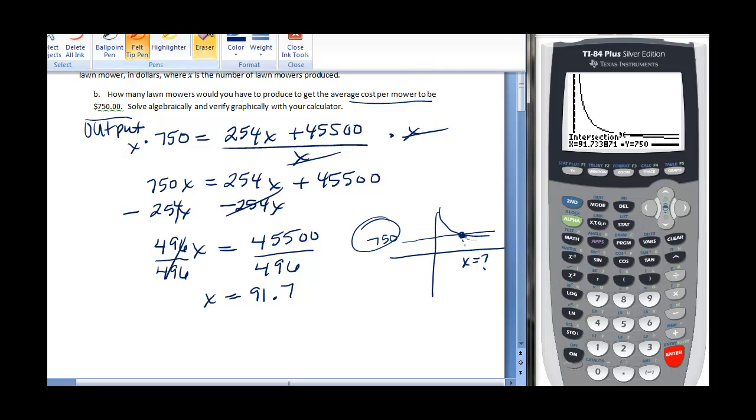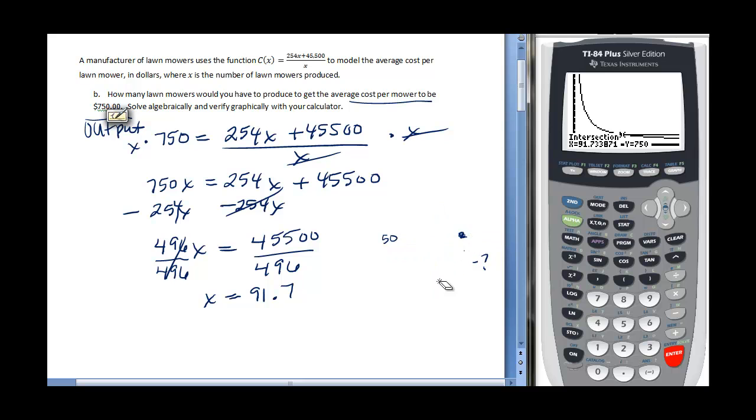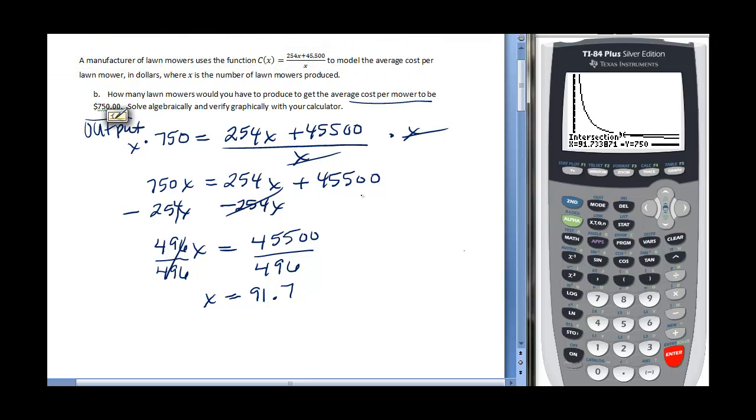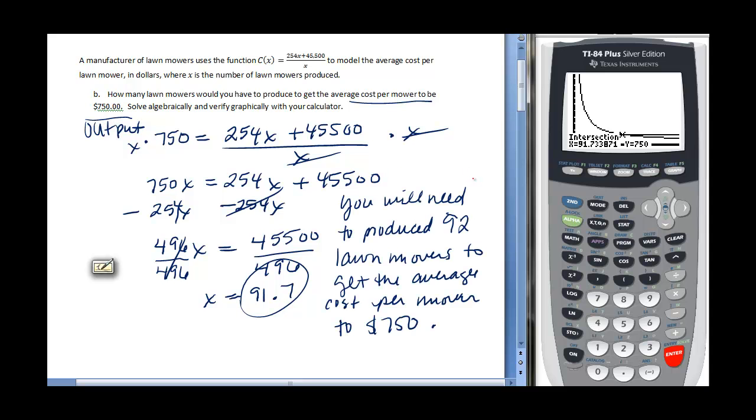What does that tell me? It tells me that I need to produce about 92 units to get the average cost down to $750. You will need to produce 92 lawn mowers to get the average cost of the mower to be $750.